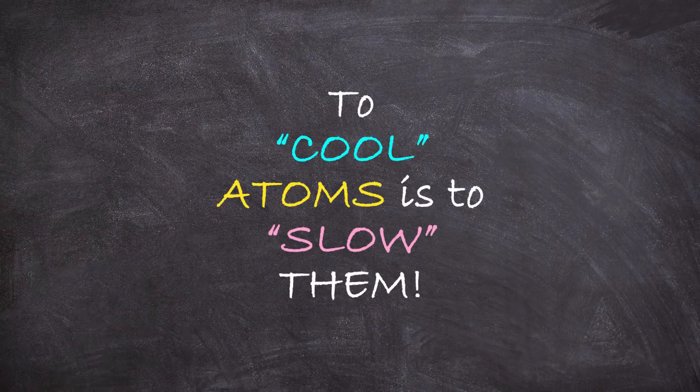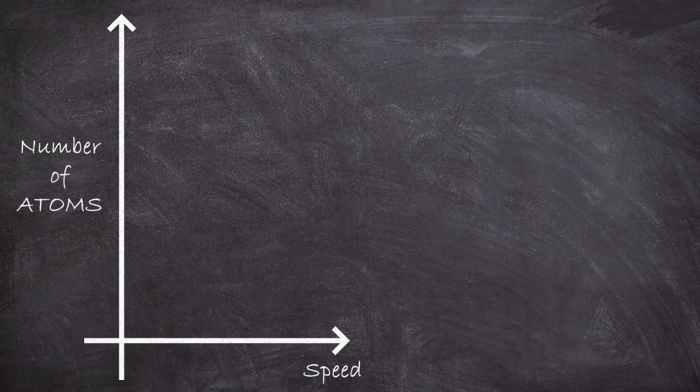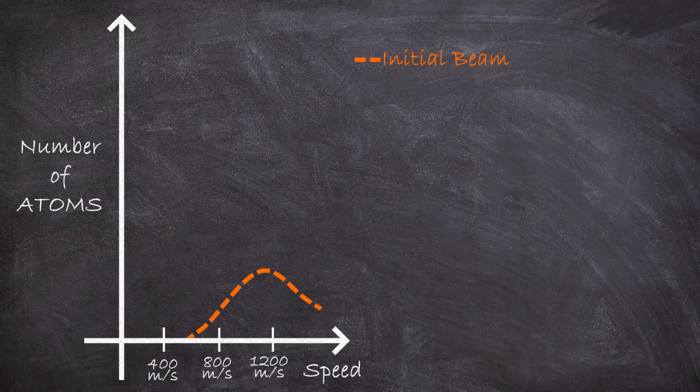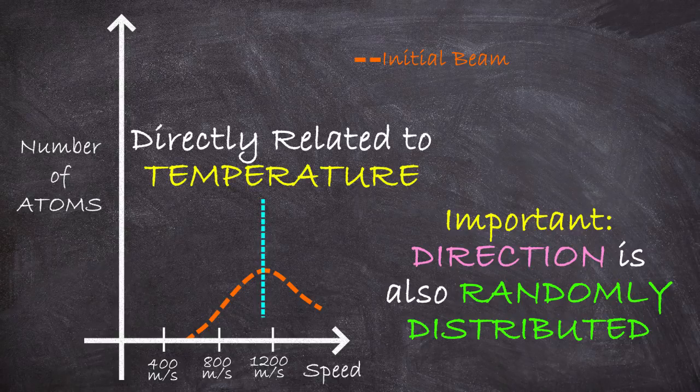We want to slow the atoms down. Temperature is basically the average speed of an ensemble of atoms. Though keep in mind that in such a thermal system of atoms, they will have a distribution of speed. Some will be going faster, some slower, and all of their directions will be totally random. But in a nutshell, the average speed is basically the temperature. And so to cool atoms is to slow them.